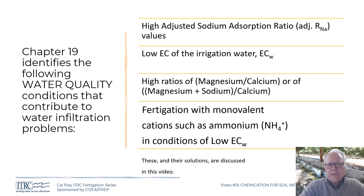High ratios of magnesium to calcium — or the combination of magnesium plus calcium plus sodium compared to calcium — are also problematic. Another consideration: if you have fairly pure irrigation water, avoid fertigating with monovalent cations such as ammonium. It would be better to use something like calcium nitrate — granted it's more expensive, but it can make quite a difference on infiltration problems. These are all discussed in this video.